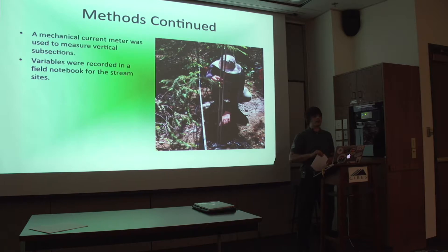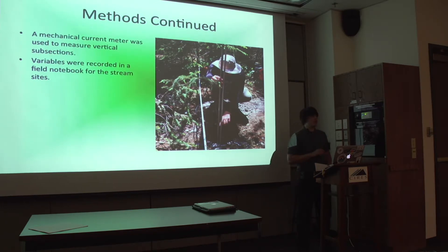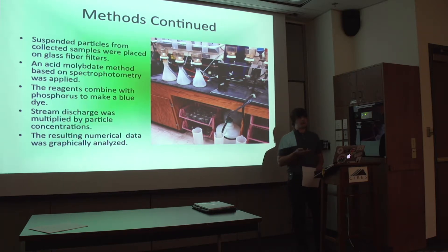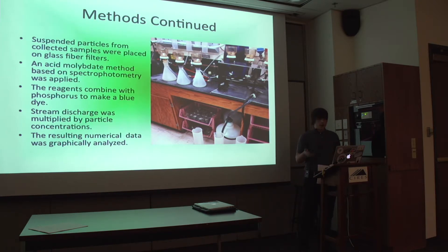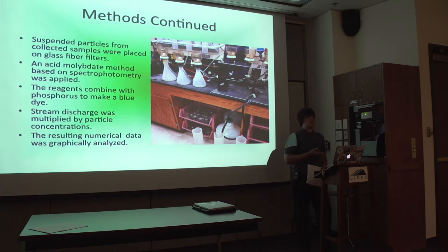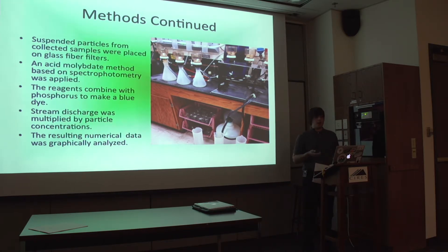We used a mechanical current meter to measure vertical subsections of the stream in order to determine its average velocity and depth. We also recorded other variables like date, weather, and time in a field notebook. We took suspended particles from collected samples, put them on glass fiber filters, and weighed the filters to determine particle concentration. We also used an acid molybdate method based on applied spectrophotometry to determine phosphorus concentration in both particulate and dissolved form. Summing those two variables gives total phosphorus. Reagents combine with the phosphorus to make a blue dye, and the amount of blue dye is proportionate to the phosphorus concentration. We also multiplied stream discharge by particle concentrations for each site to get total suspended solids and total phosphorus mass transport.